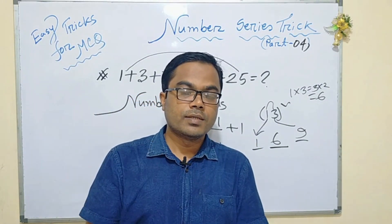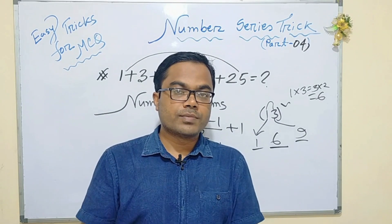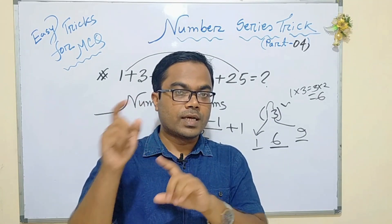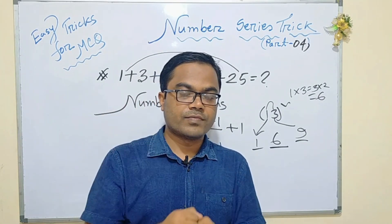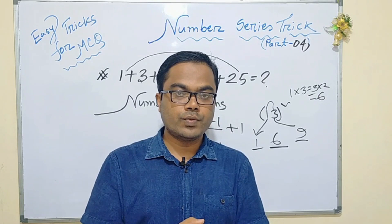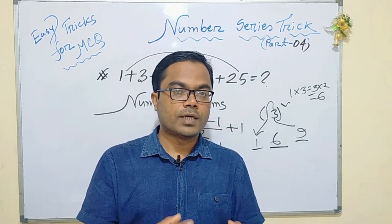To summarize: number of terms equals last number minus first number divided by 2, plus 1. Then sum equals number of terms squared.